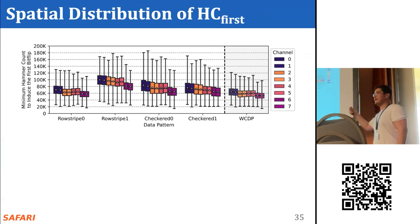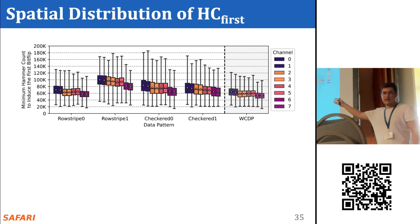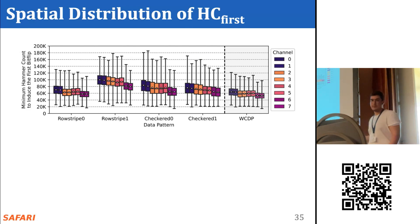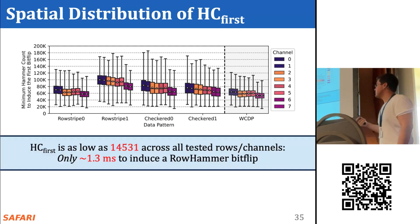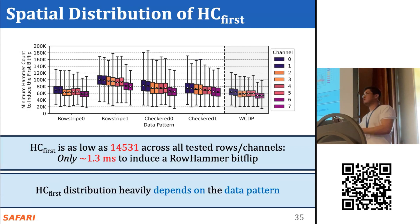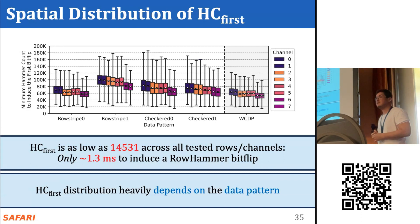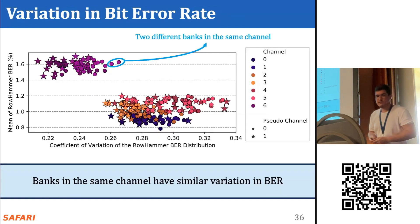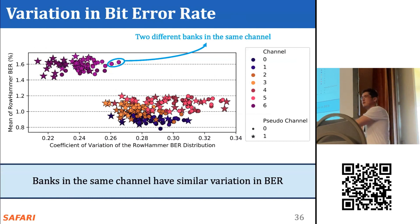This plot shows the distribution of the number of activations needed to induce the first bit error (HC-first) in a channel on the y-axis, with different boxes showing distributions for different channels, and data patterns on the x-axis. We observe that HC-first is as low as around 14,000, meaning we can induce the first bit flip in around one millisecond. The HC-first distribution depends heavily on the data pattern, meaning we must exhaustively test all data patterns to properly assess RowHammer vulnerability. Due to time limits, I'll skip the variation analysis across rows in a bank but I'll be happy to take questions.